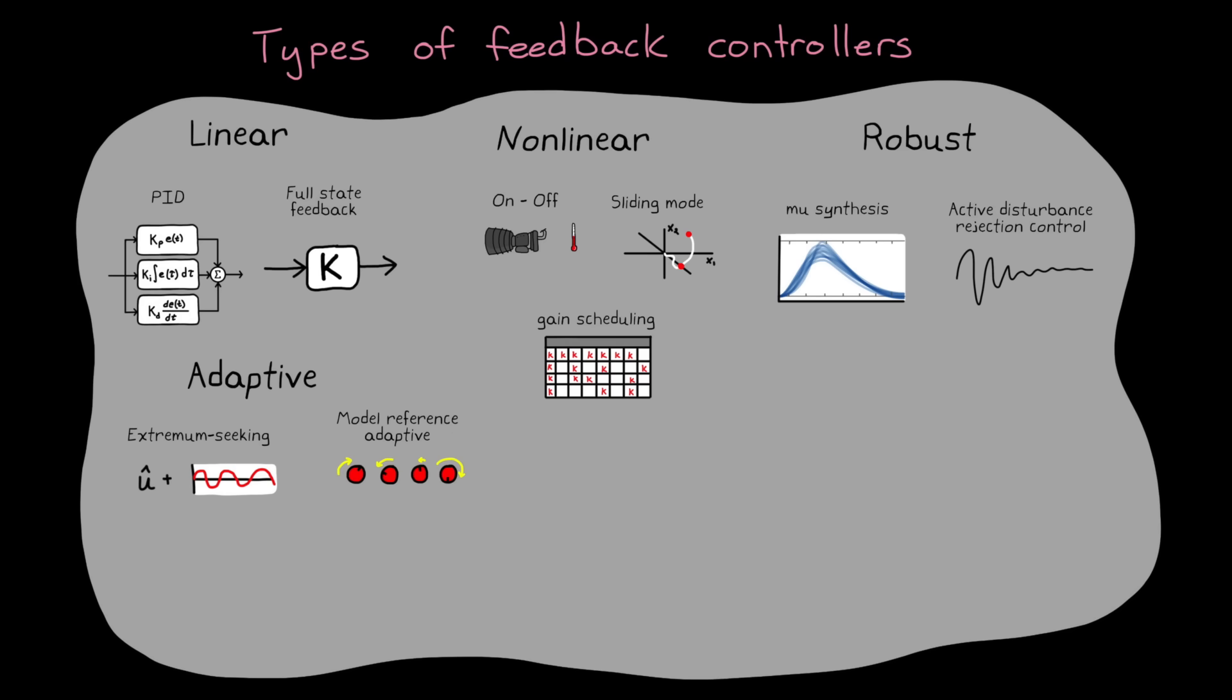There are adaptive controllers like Extremum Seeking and Model Reference Adaptive Control that adapt to changes in the system over time. There are optimal controllers like LQR where a cost function is created and then the controller tries to balance performance and effort by minimizing the total cost.